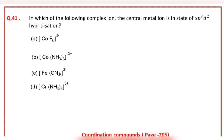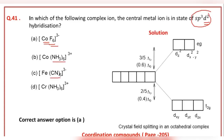In which of the following complex ions is the central metal ion in a state of sp³d² hybridization? The correct answer option is A, with a fluoride ligand.